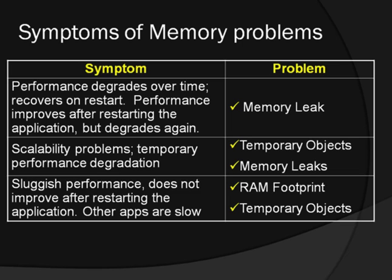If you have sluggish performance which doesn't improve after restarting, and other executing applications are also slow, the RAM footprint of the application is suspect. The application is using up a lot of memory, and you need to investigate that and identify if all the objects in memory are absolutely necessary all the time. Temporary objects can also cause this kind of sluggish performance if temporary object allocation is excessive in large parts of the application.